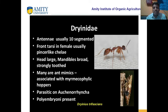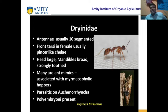A new family is Dryinidae. The antenna is chained-segmented. Front tarsi in females are usually pincer-like chelae. The head is large with broad mandibles and a strong tooth. Many are ant mimics — they look like ants. They are associated with myrmecophilous hoppers and are parasitic on leafhoppers.